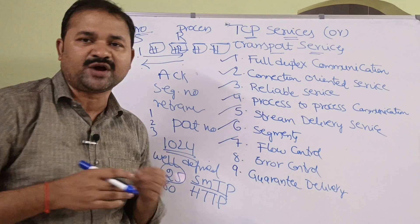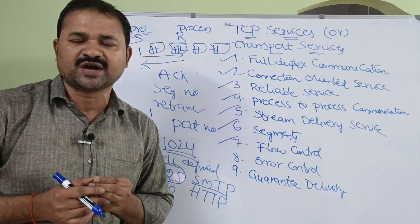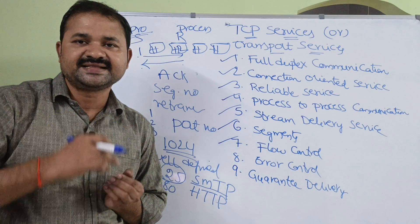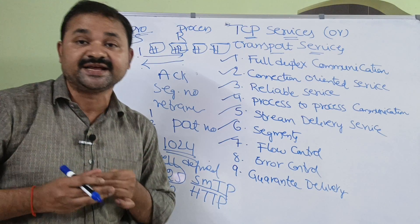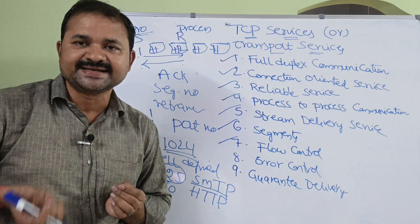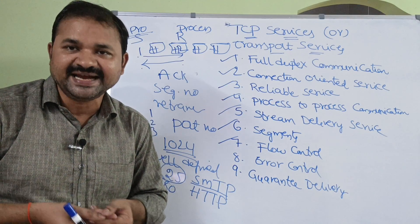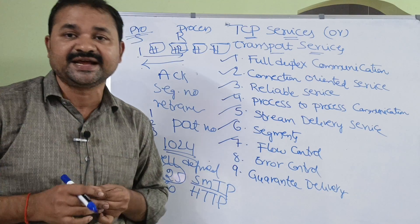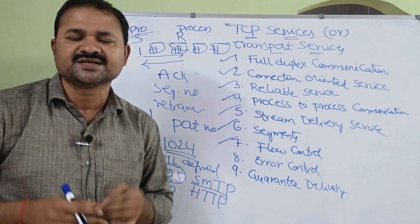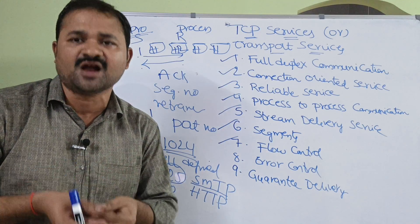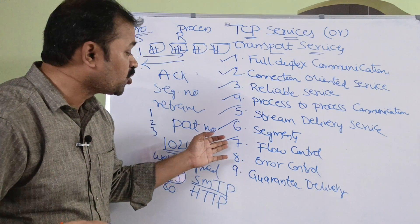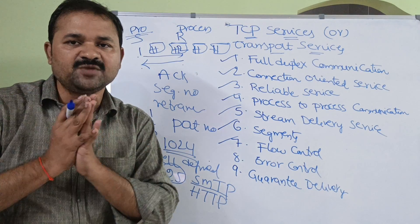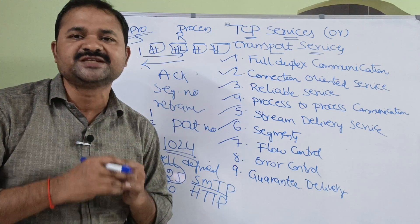The next service is flow control. If the sender is sending segments at a faster rate while the receiver is consuming segments at a slower rate, some segments may be lost. TCP provides various flow control mechanisms so that there is no loss of any segments or data.